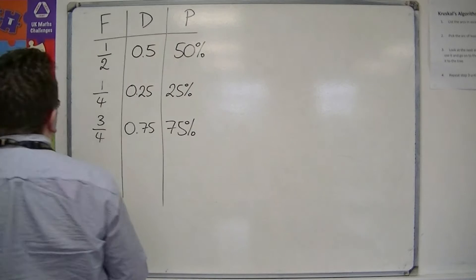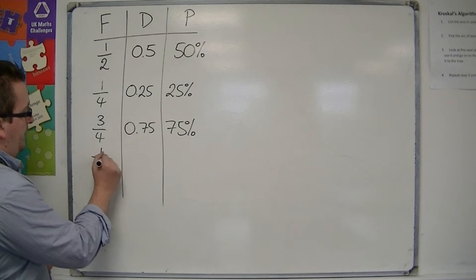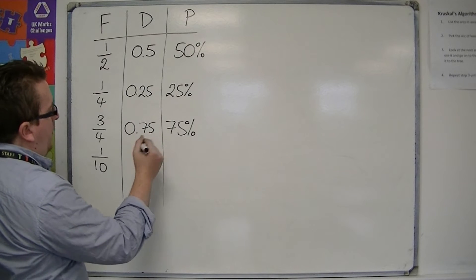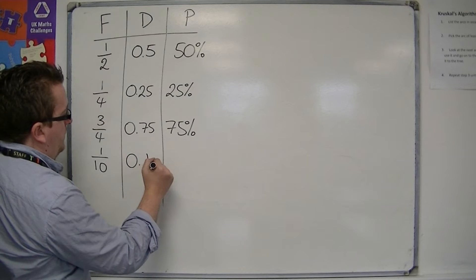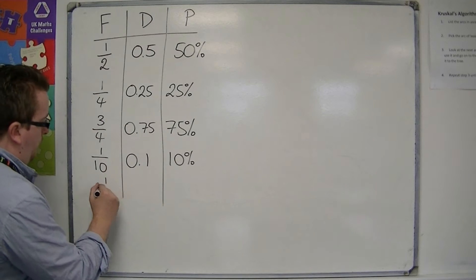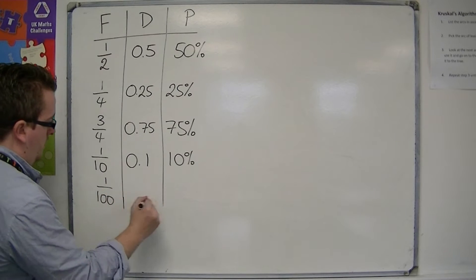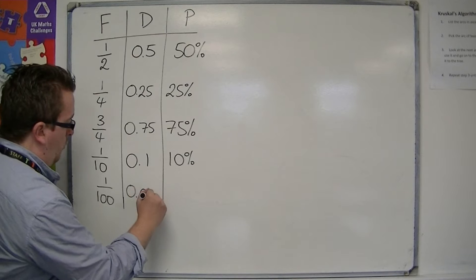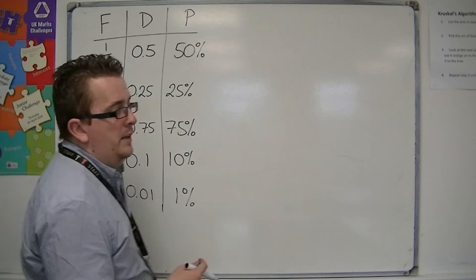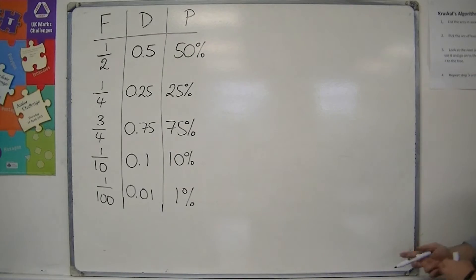I would also be thinking that you would know what 1 tenth is. So, 1 tenth is 0.1, so 10%. And, of course, 1 over 100 is 0.01, which is 1%. So these are ones that I would expect you to be able to recognize.